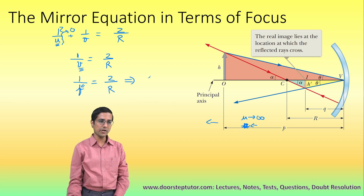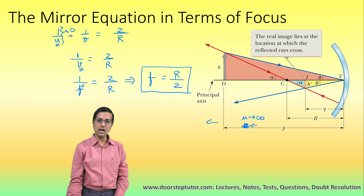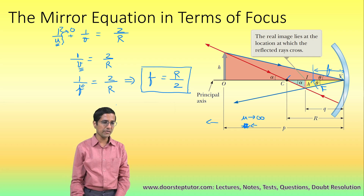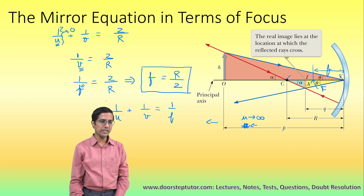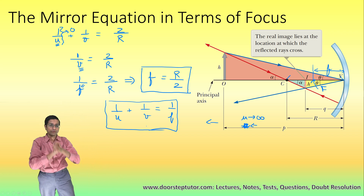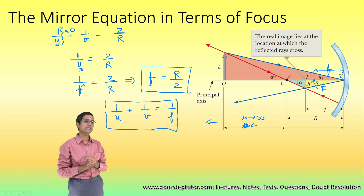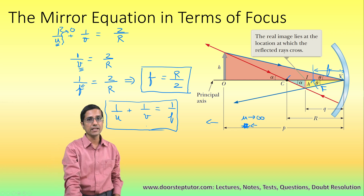This gives the very important relation F equals R divided by 2 — the focal length of a mirror is always half the radius of curvature. The point at half the radius is known as the focus. We can now write the mirror equation in terms of focus: 1 by V plus 1 by U equals 1 by F. Both forms — in terms of R and in terms of F — are very important, and we will solve numericals based on them.